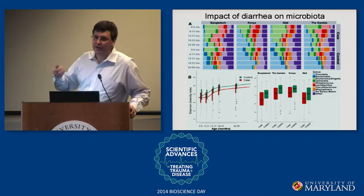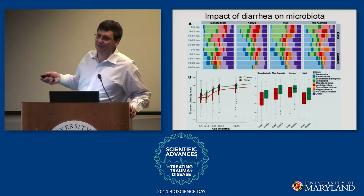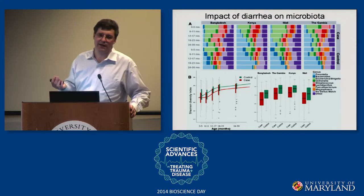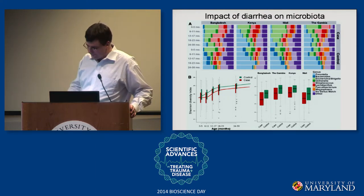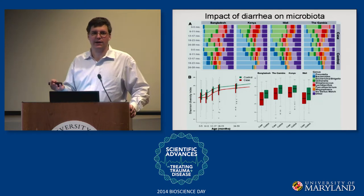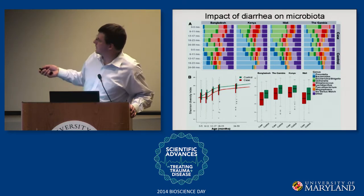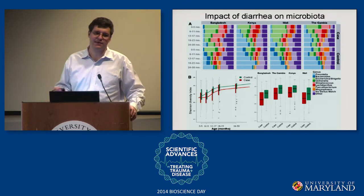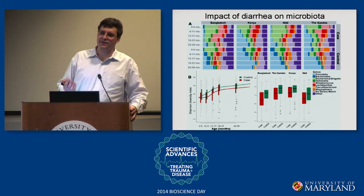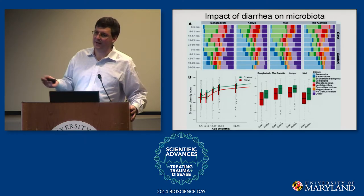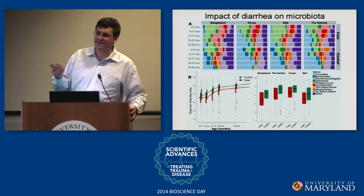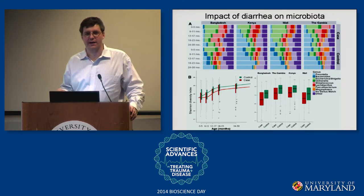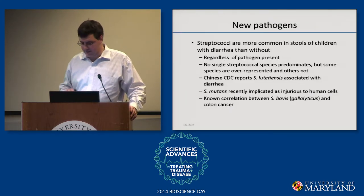Looking at bar plots across ages comparing sick and healthy children, you can immediately see a difference in bacterial populations. There's a lot of green — Escherichia coli and organisms like it — in early children that almost disappears in older children. E. coli is actually important for development of the immune system in newborns. But in sick children, even at older ages, you see a lot more E. coli. However, the new thing we found was a little pink group — streptococci. No one knew that streptococci could cause diarrhea. That was our big discovery.